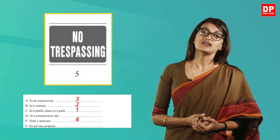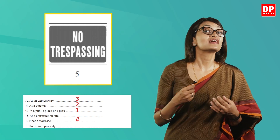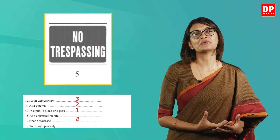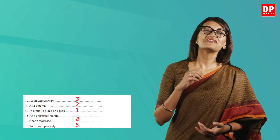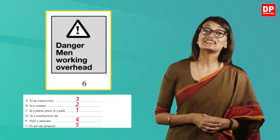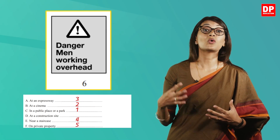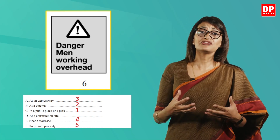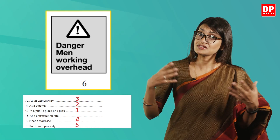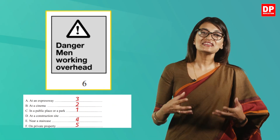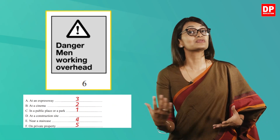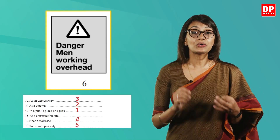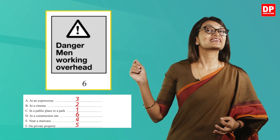The fifth sign states 'No trespassing.' Trespassing means to enter someone's property or land without permission, so a sign like this would be found on private property — answer F. The final sign reads 'Danger — men working overhead.' This is an important sign to have around a construction site, making you more alert when walking near a building that is being built — answer D.